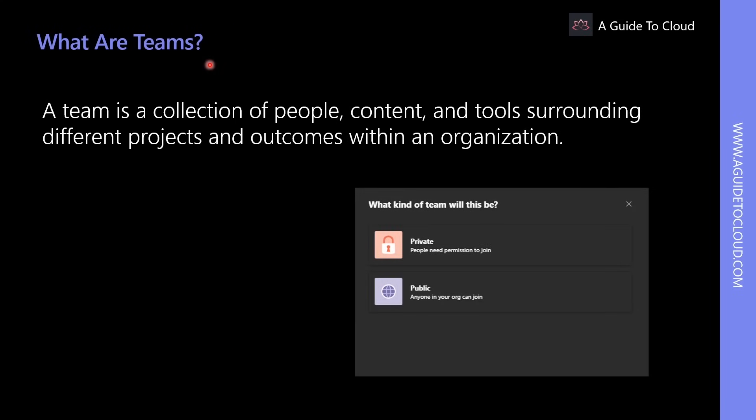A team is a collection of people, content, and tools surrounding different projects and outcomes within an organization. A team can either be private, consisting only of invited users, or public, which is open to anyone within the organization. To achieve efficiency through a flat hierarchy, Teams provides only two user roles: owners and members.